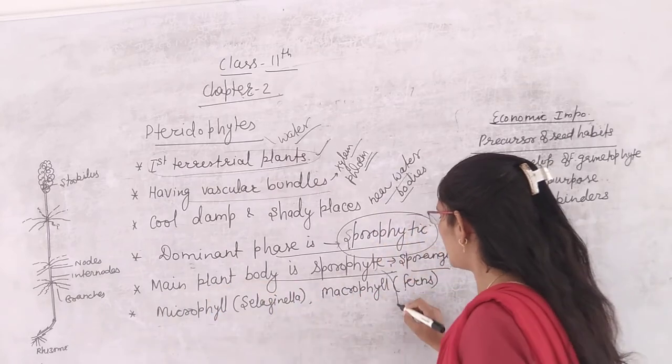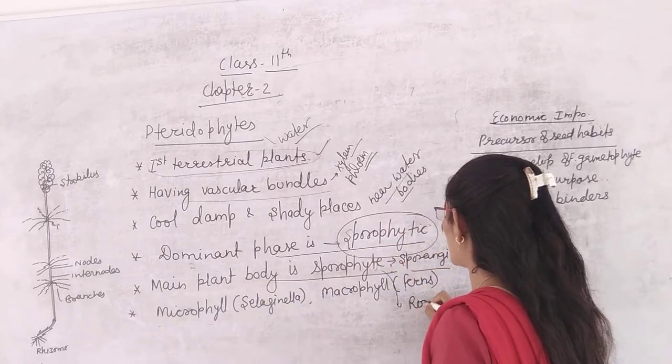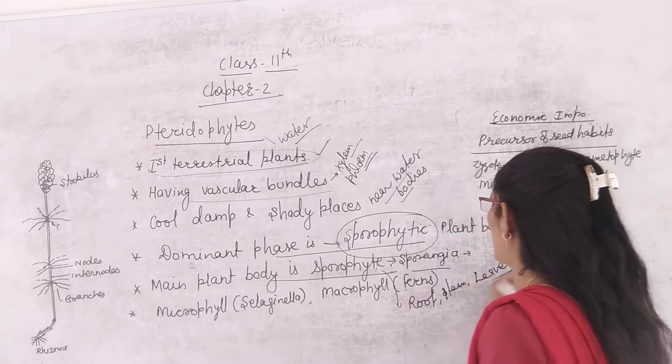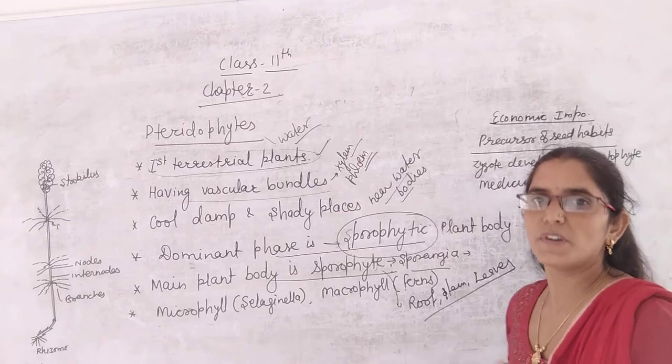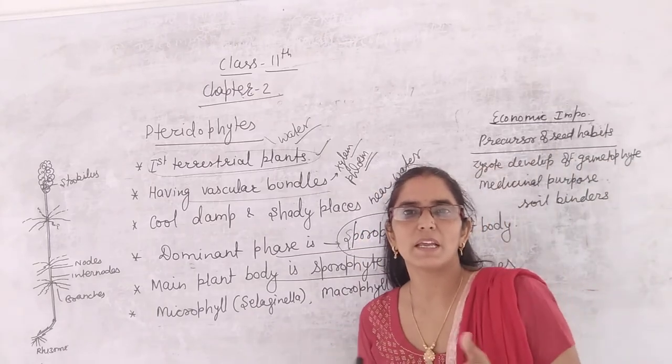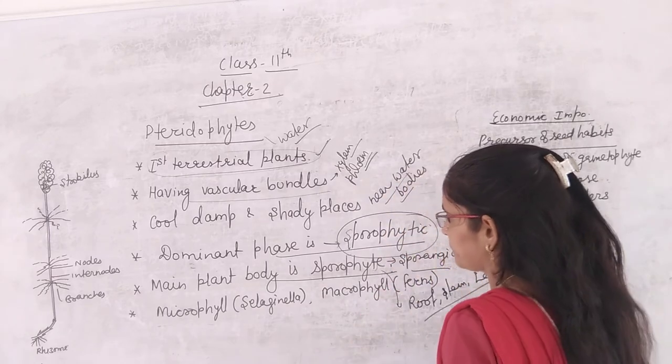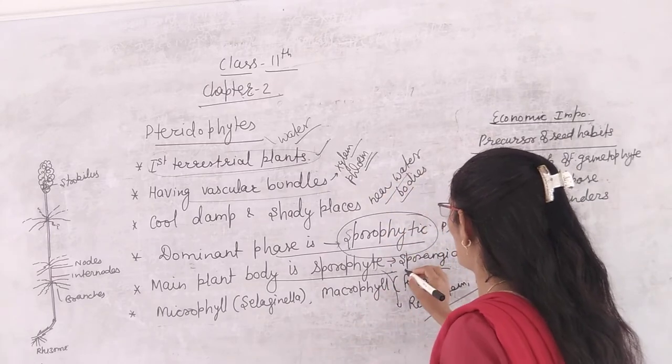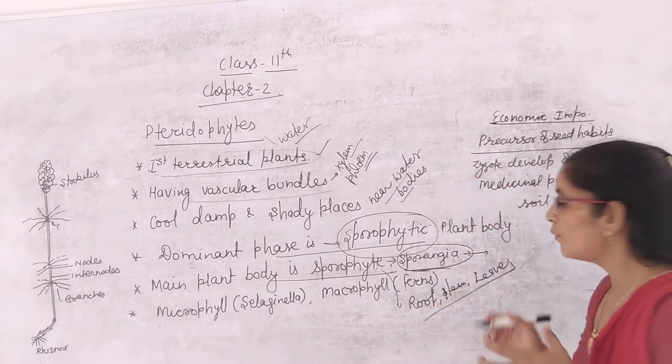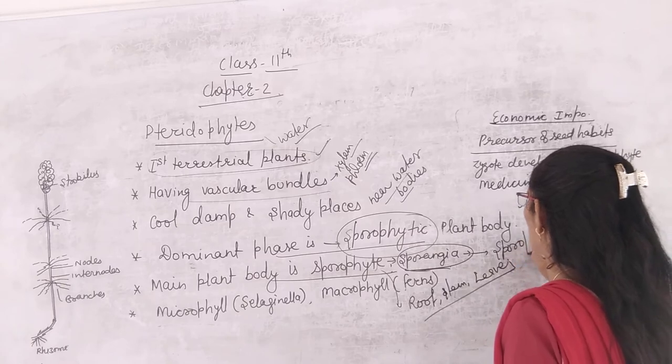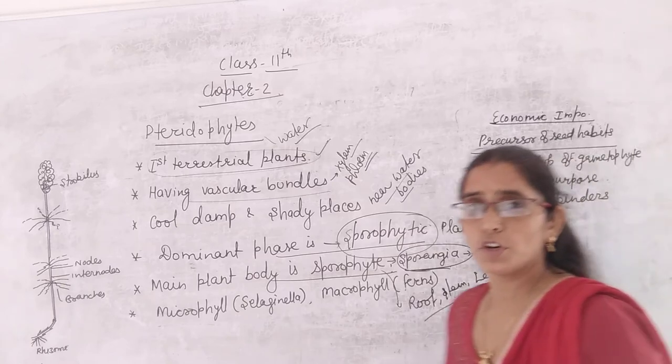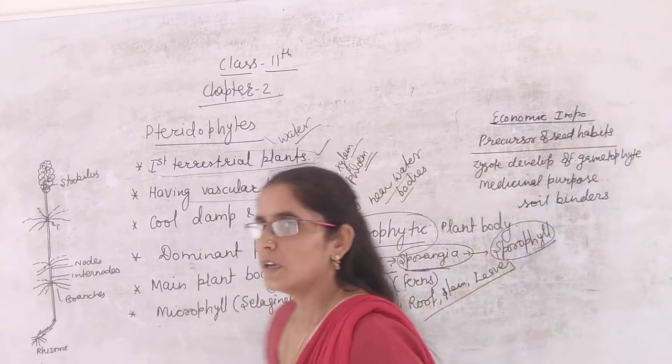Main plant body is sporophytic and they are differentiated into true root, stem and leaves. Now the sporophytic phase has sporangia. Sporangia that is extended in the form of leaves, which we call sporophyll. So you can say sporangia-bearing leaves, they are known as sporophylls.